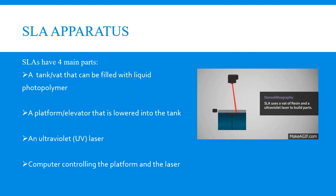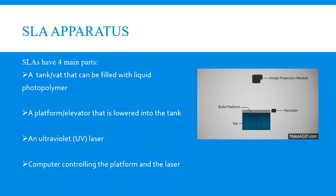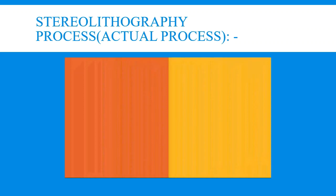The stereolithography apparatus consists of four main parts: a tank filled with liquid photopolymer, a platform or elevator that can be lowered into the tank, an ultraviolet laser, and a computer that controls the motion of both the platform and the laser. The computer also stores the CAD model of the file which is to be printed.